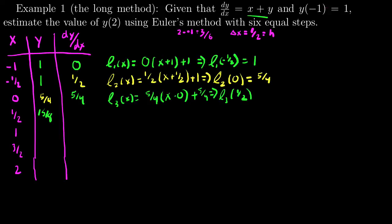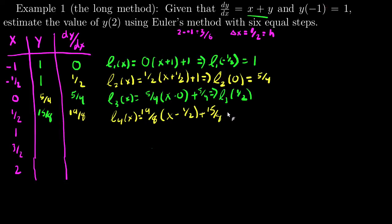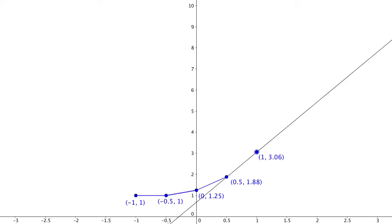Continuing. I add x plus y: one half plus 15/8 gives me 19/8. So my fourth linear approximation is (19/8)·(x − one half) + 15/8. Evaluating at x = 1: 1 minus one half is one half, times 19/8 is 19/16, plus 15/8, which is 30/16, gives me 49/16. Back to the graph — tangent line, half-unit step to the right, connected up.